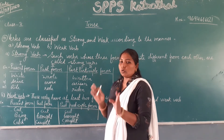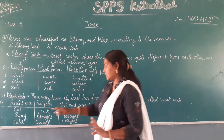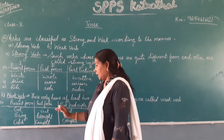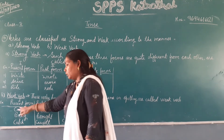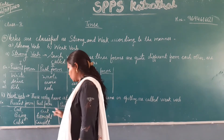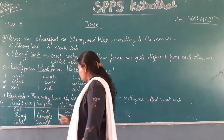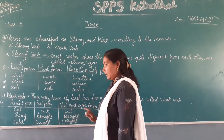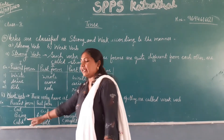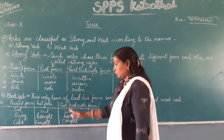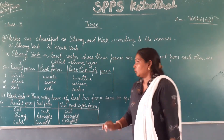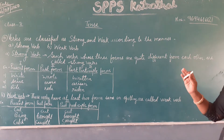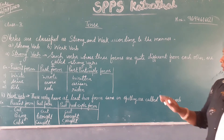But at least two forms will be similar. For example: cut, cut, cut — all three are the same. Then bring, brought, brought — the first is different but the second and third are the same. Similarly catch, caught, caught — again the second and third forms are the same. This is how we study strong and weak verbs.